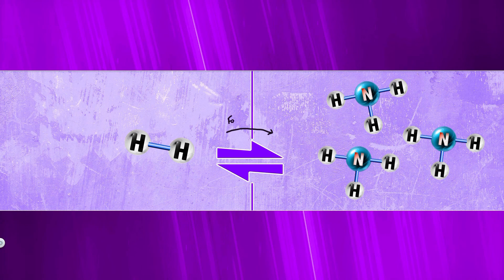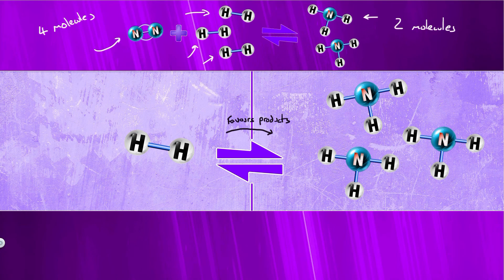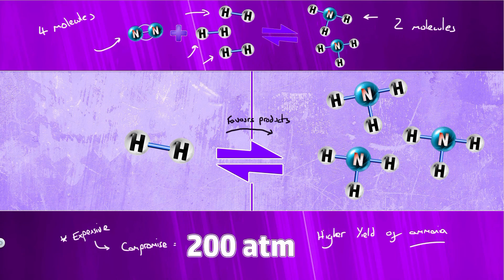Increasing pressure favours the side with the least number of molecules. In the Haber process we have four molecules on the left — one N₂ and three H₂ — but only two molecules on the right, our two NH₃ molecules. So it favours the right-hand side, our products. By increasing pressure we get a higher yield of ammonia. However, higher pressure means more cost to build the equipment, so we compromise at 200 atmospheres — a balance between cost and yield.